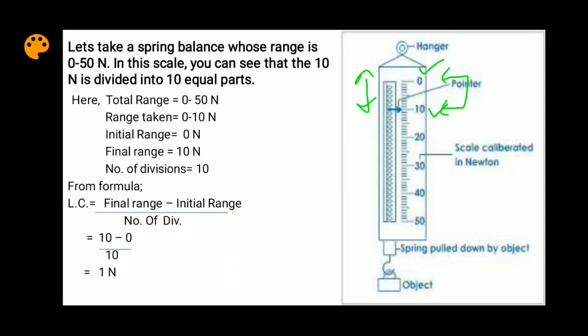Number of divisions are the lines between initial range and final range. And as you can count them from the picture, there are 10 lines.